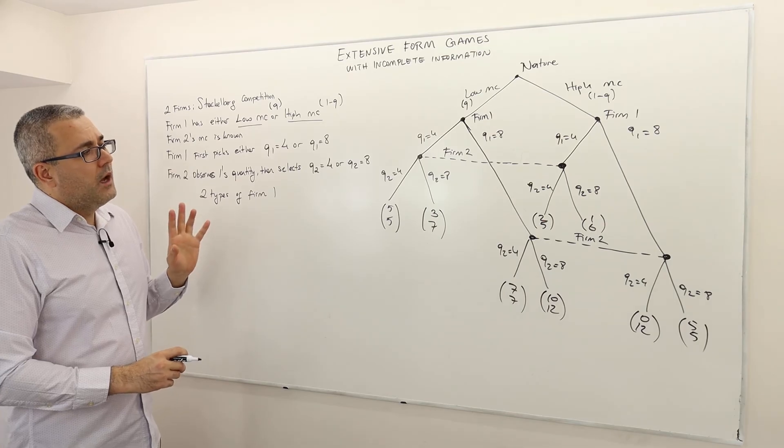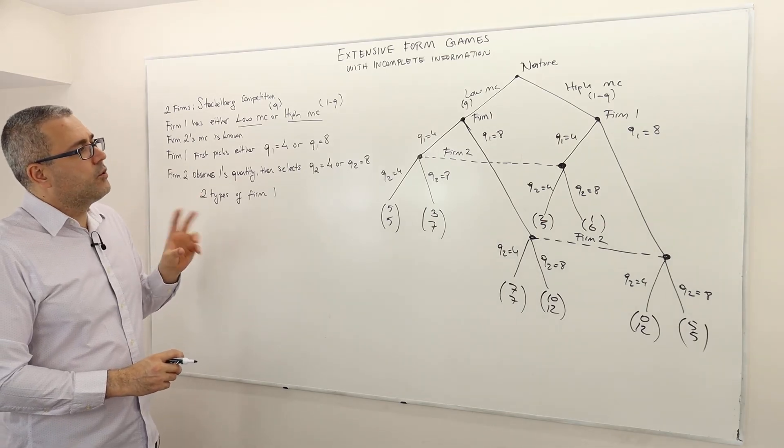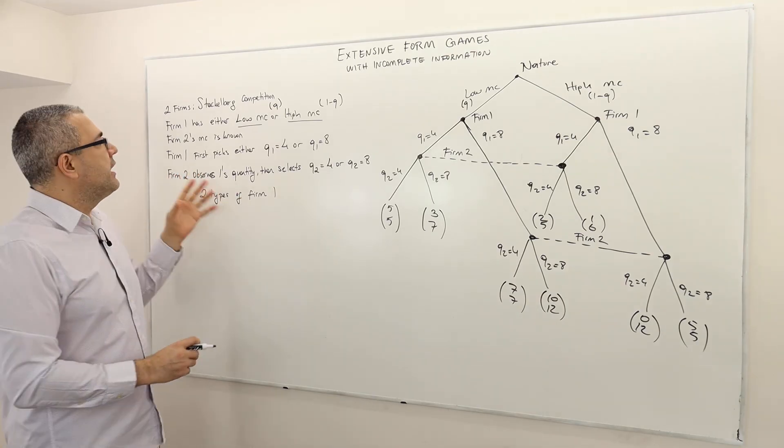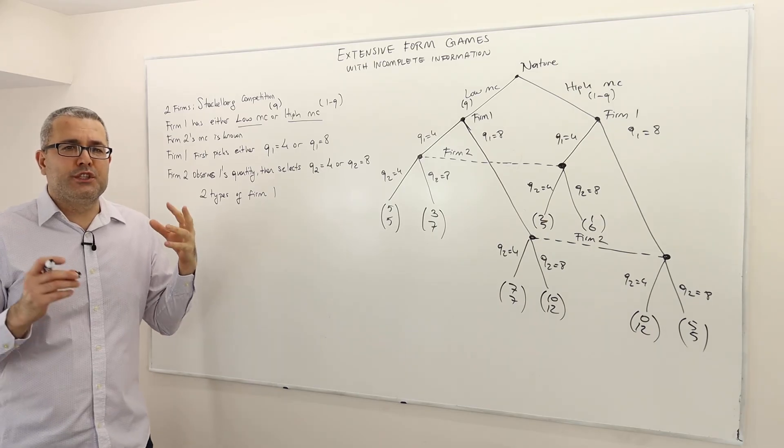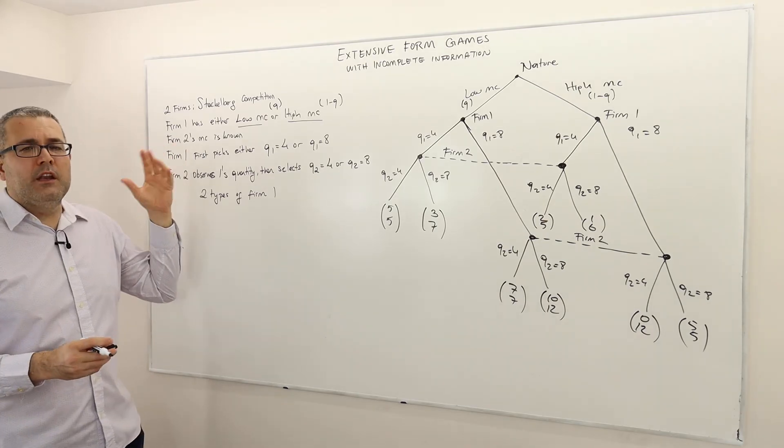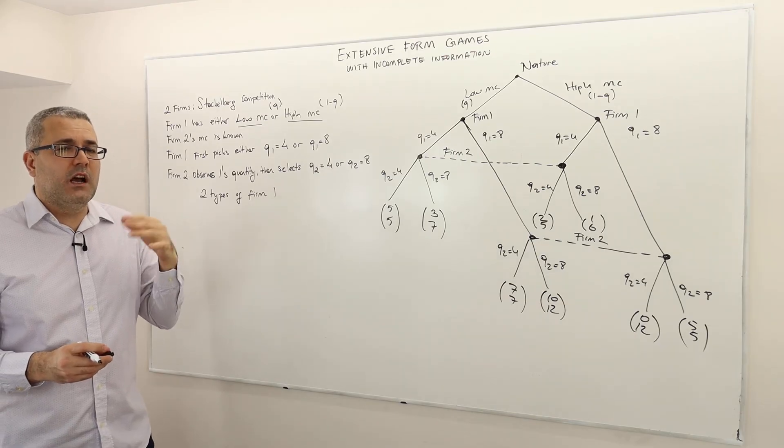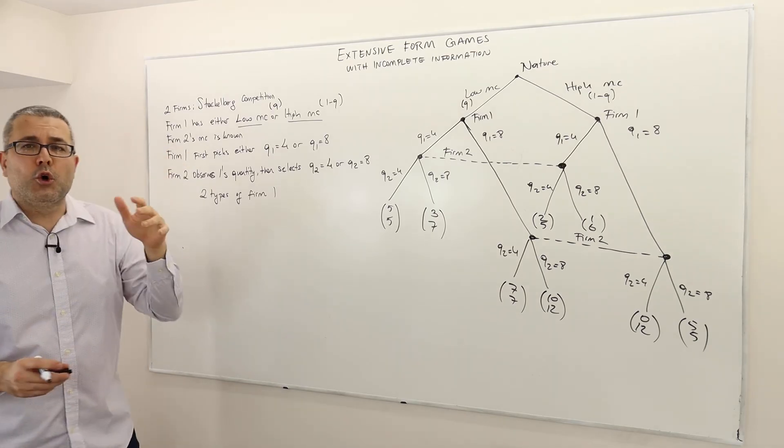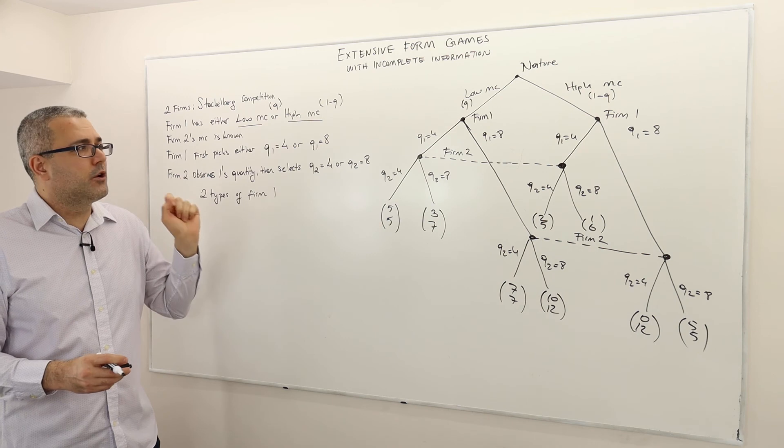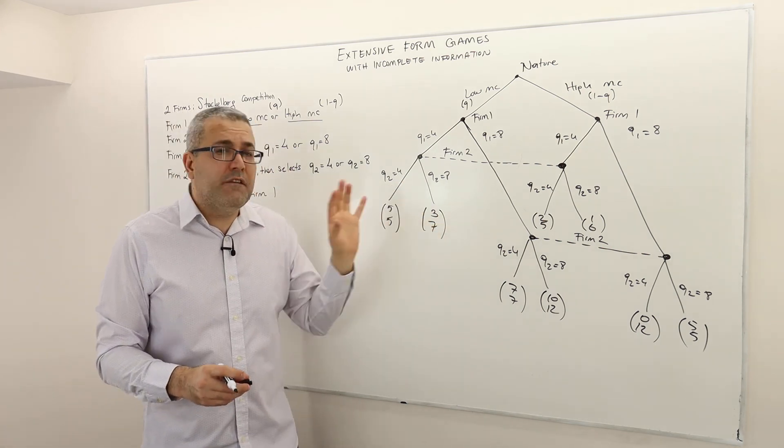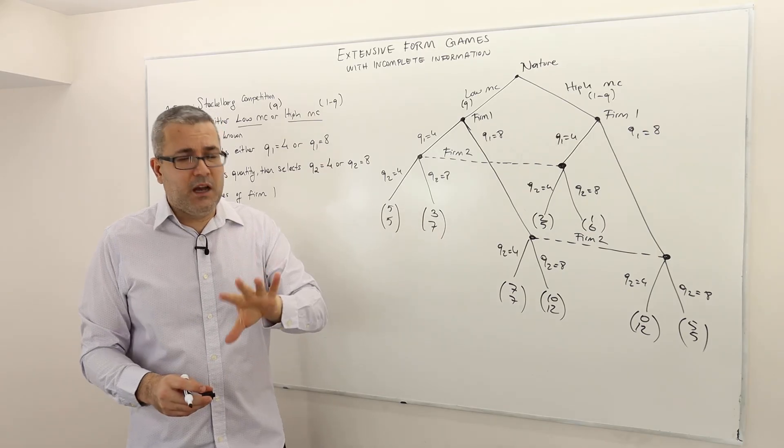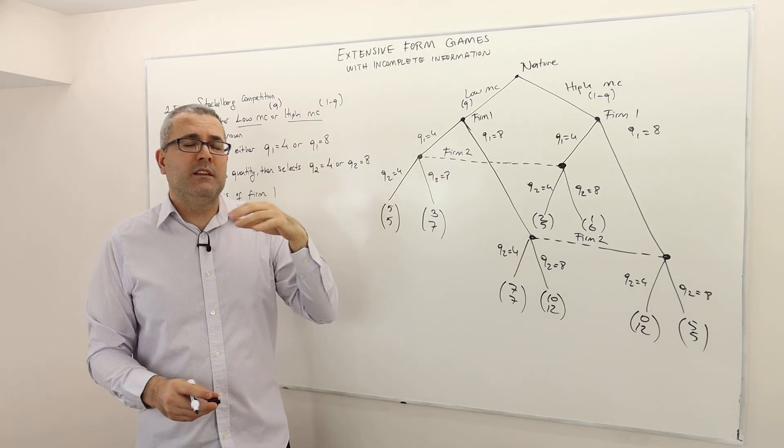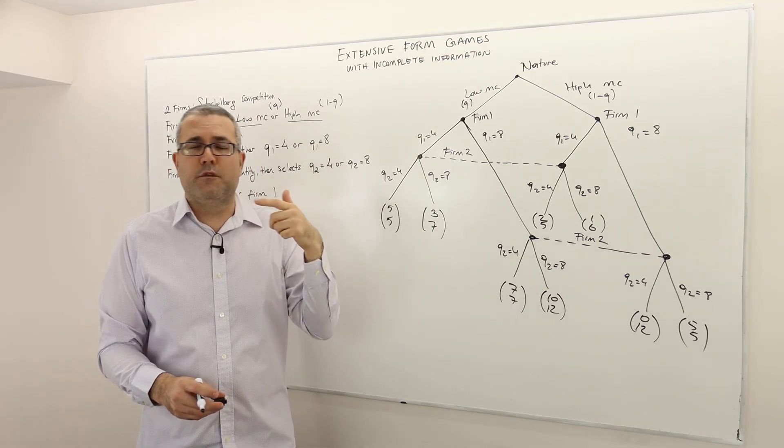Well, so one question I would like to ask is, what would be the game tree if for example the asymmetric information was two-sided? Meaning both firm 1 and firm 2's marginal costs are not commonly known or publicly known, but they are privately known. Meaning firm 2 could also have low marginal cost, high marginal cost. Well then the game tree would be definitely more complicated than this. And I am not going to draw it. But the thing is, then the nature does not only determine firm 1's type but also firm 2's type.